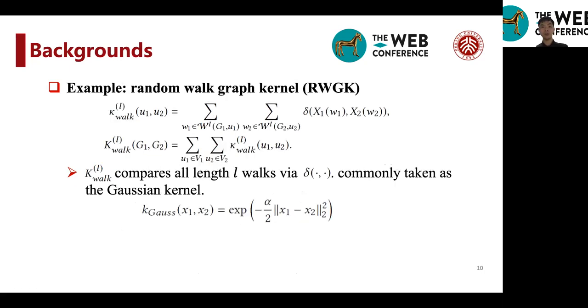Let me show you an example. The random walk graph kernel is a commonly used kernel in graph classification, which is done by comparing all length L random walks on two graphs via a base kernel delta.